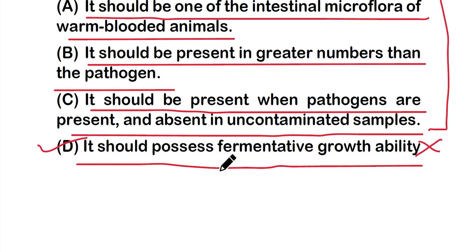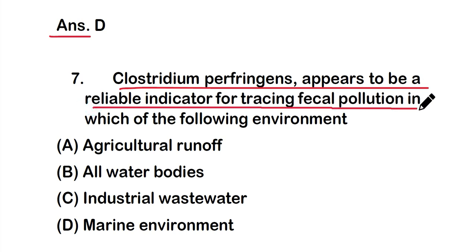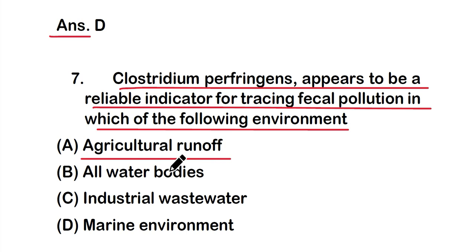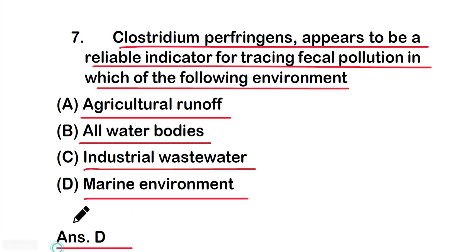Question seven: Clostridium perfringens appears to be a reliable indicator for tracing fecal pollution in which environment? Options: option A - agricultural runoff, option B - all water bodies, option C - industrial wastewater, option D - marine environment. The right answer is option D — Clostridium perfringens is a reliable indicator for tracing fecal pollution in the marine environment.